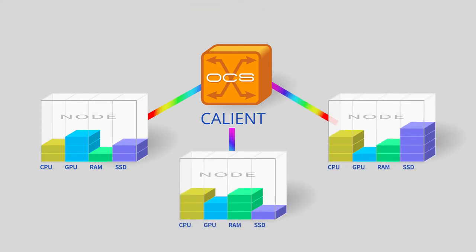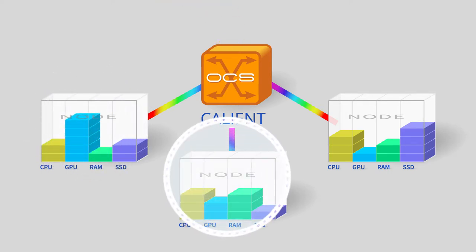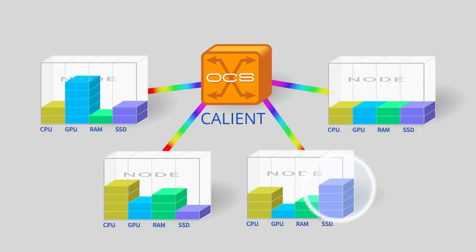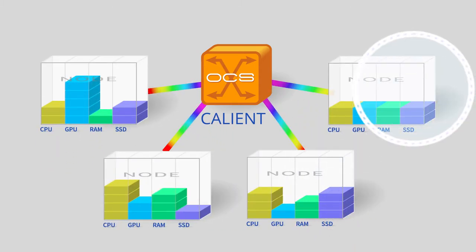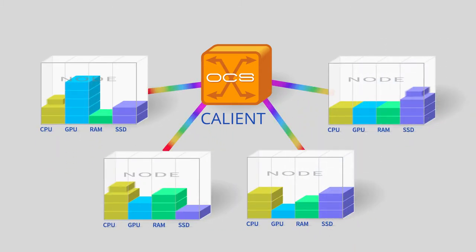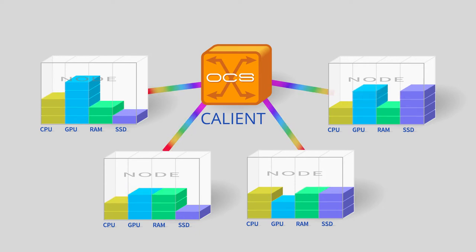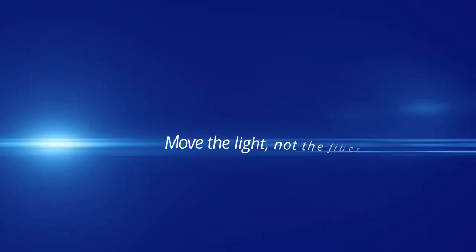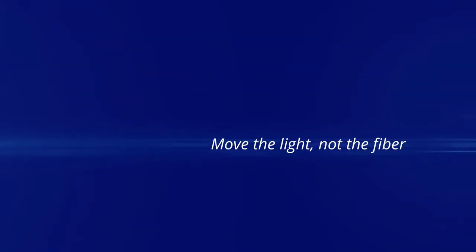With an optical cross-connect, you can allocate more GPUs to a node, or allocate more CPU cycles to a node, or redeploy storage to meet the needs of an application. With Caliant optical circuit switches, you can make these changes automatically and remotely at the speed of light — because you move the light, not the fiber.